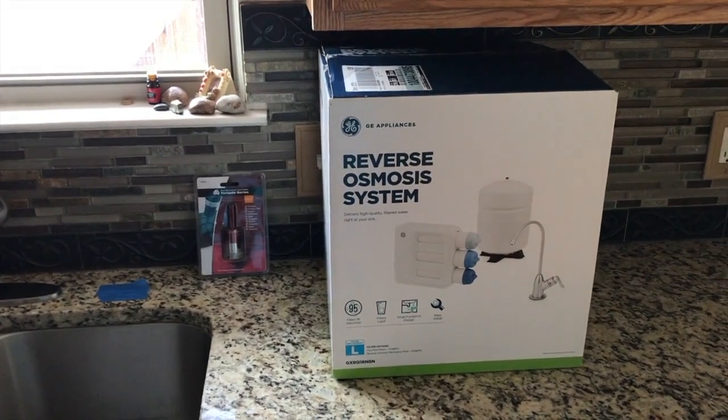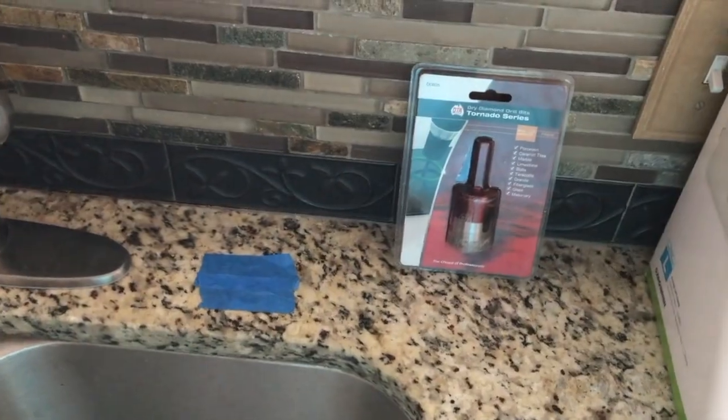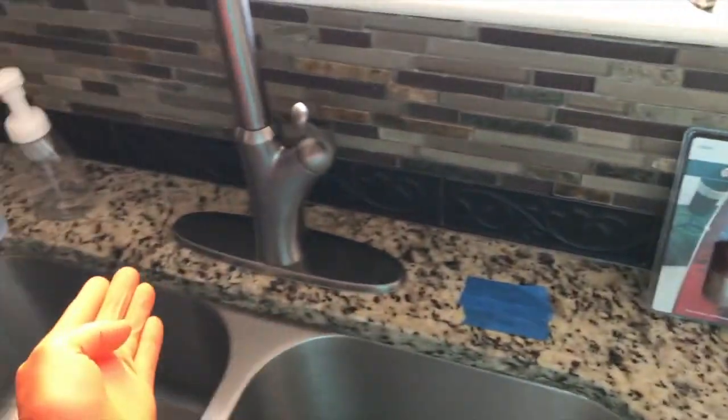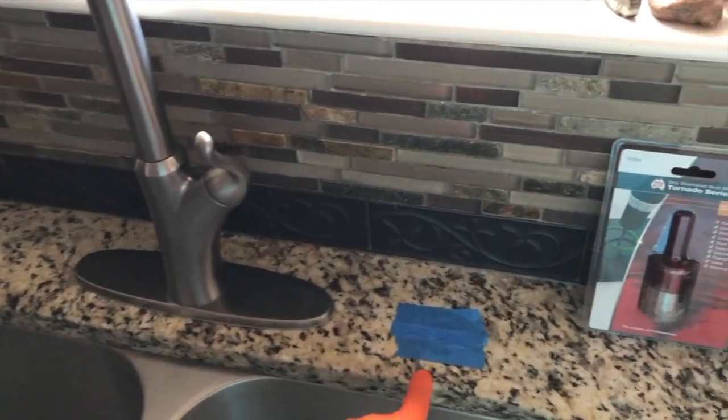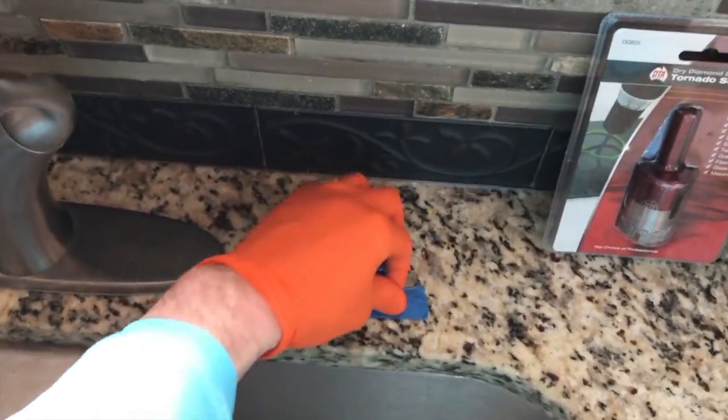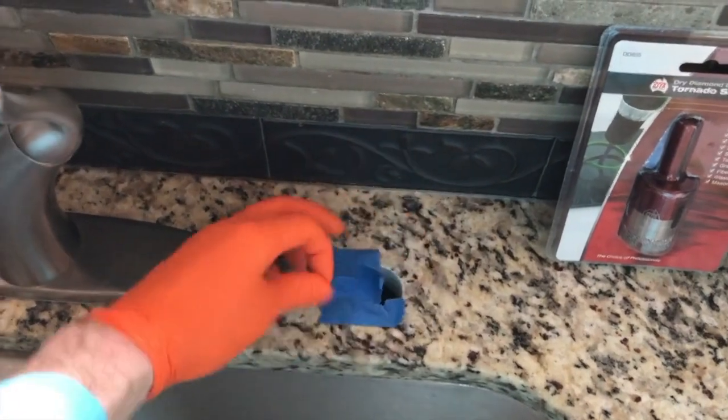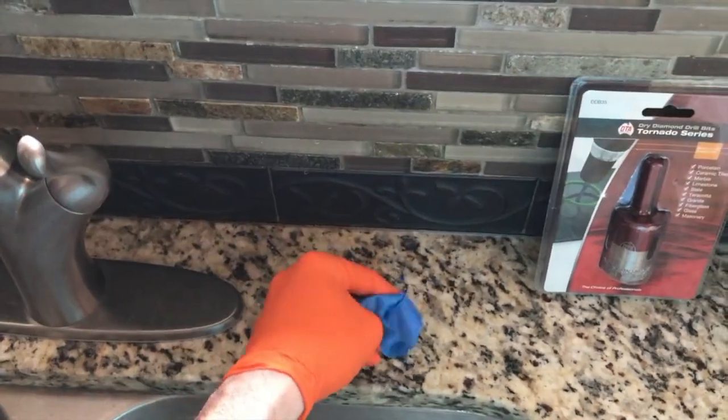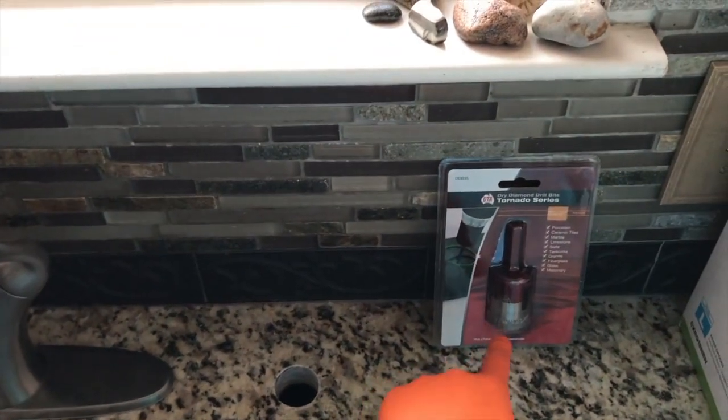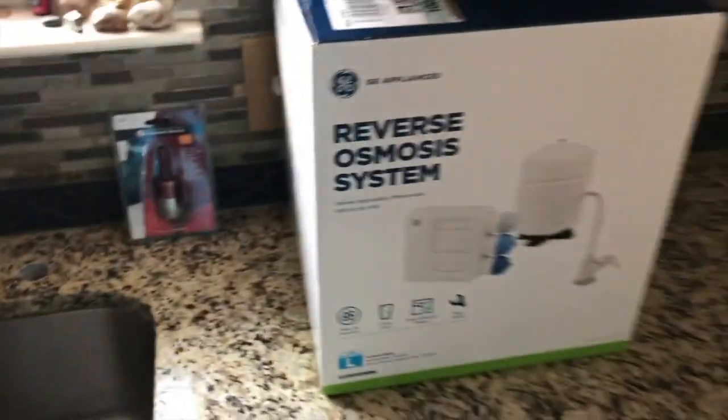There is our reverse osmosis system, a GE brand. I looked up the instruction manual prior to purchasing this and it required a one and three-eighths diameter hole to be cut. Depending on your setup, you may be able to use an existing hole. In our case, we did not have that option and I made a separate video a few days back. At the top of the video now is a step-by-step video on how to use this awesome drill bit which is diamond coated to drill this hole. From here let's open up the box and organize all the parts.